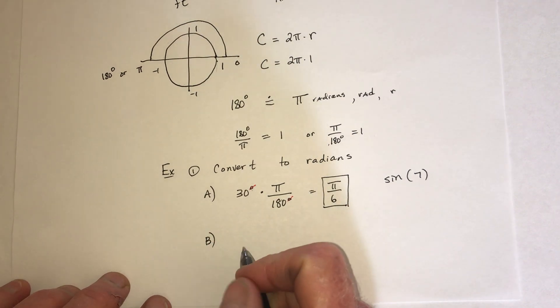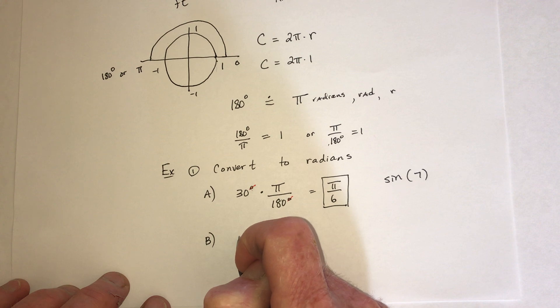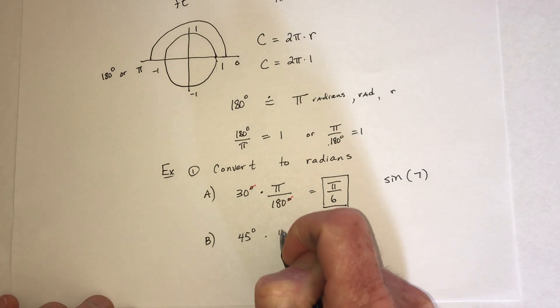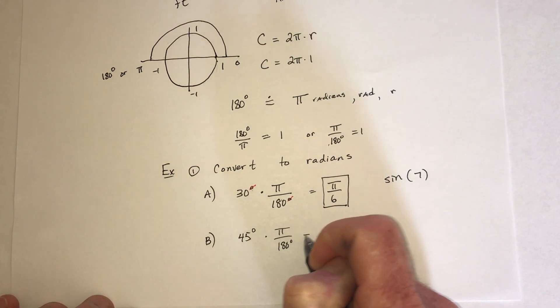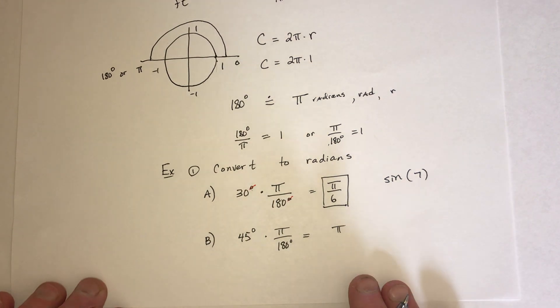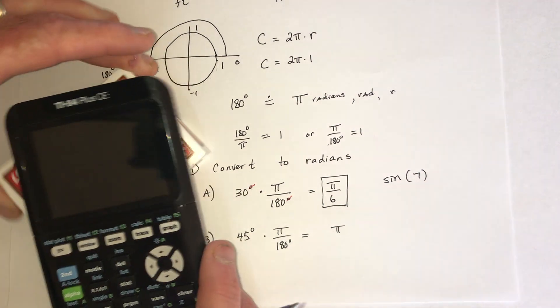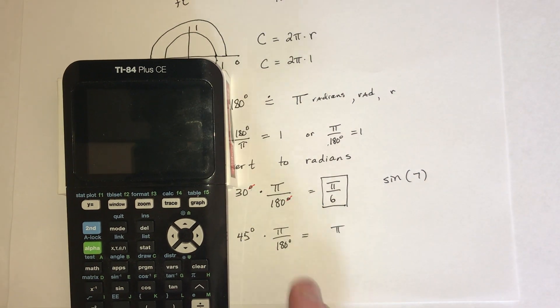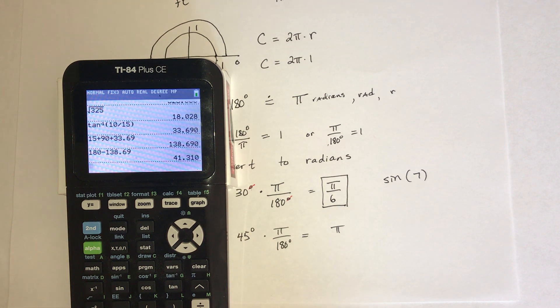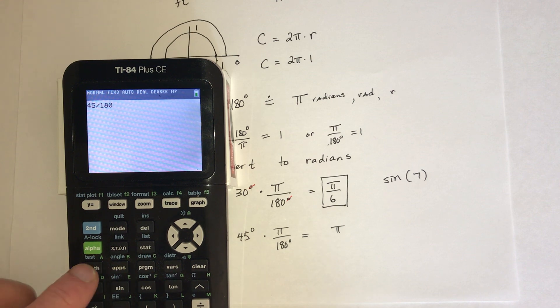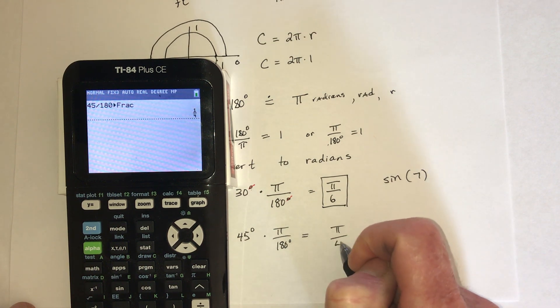Then part B, how about, let's go with 45 degrees. So again, you multiply by pi over 180. So it's going to be some fraction of pi. So you could reduce 45 divides into 180 four times, so it's going to leave one-fourth. Or you could take just this 45 over 180 part, 45 over 180, and then go to math and change that to a fraction, and it'll reduce it for you. So it's one-fourth of pi, or in other words, pi over 4.